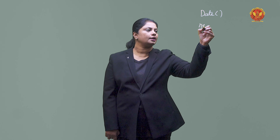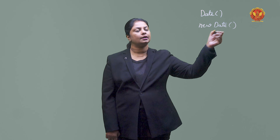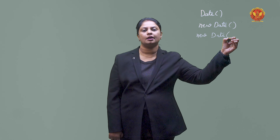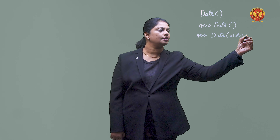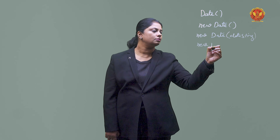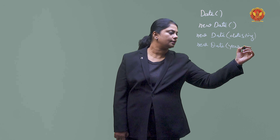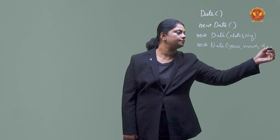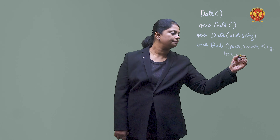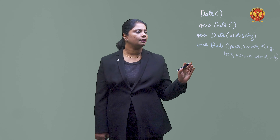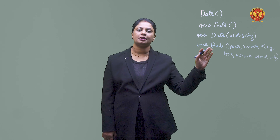There are different ways to create a date object. If you write 'new Date', you can give different parameters to it. You can use many parameters, like year, month, day, hour, minutes, seconds, and milliseconds. These are all parameters, but if you don't pass a parameter, then it will default to 0. So these parameters are optional.